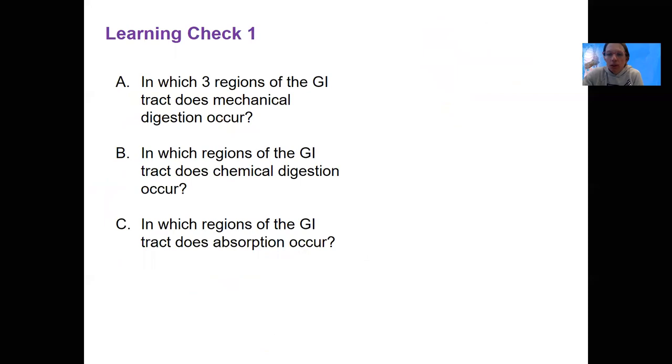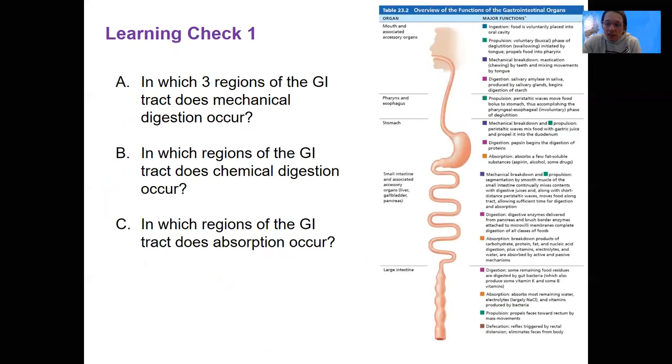Learning check. In which three regions of the GI tract does mechanical digestion occur? Which regions does chemical digestion occur? And what about absorption? I'm going to bring up a complicated figure. And I want you to, it's a nice resource. So I want you to have this as well. A lot of the details in this figure are things that won't be familiar to you yet. This buccal phase of swallowing, deglutition, the process of swallowing, the peristaltic waves. So those details we're going to get to. This is the detailed overview that at the end of this whole two weeks is a great review at the end. But we can use it right now to answer these questions.